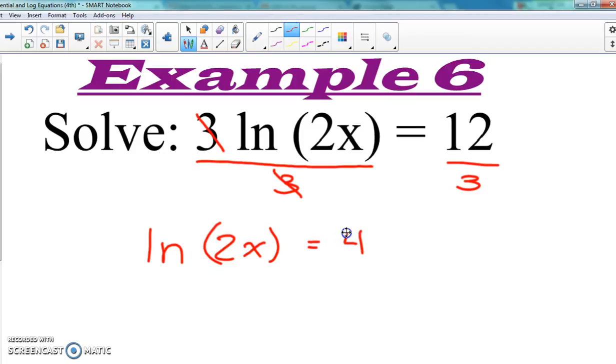So we get natural log of 2x equals 12 divided by 3, which is just 4. So that's our first thing - isolate, get that natural log by itself. The next thing is to get rid of this natural log. This is one of those rules we talked about very briefly, but it's very important to understand because when the bases are the same, we can get rid of it.